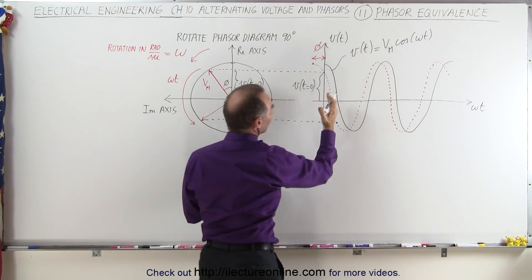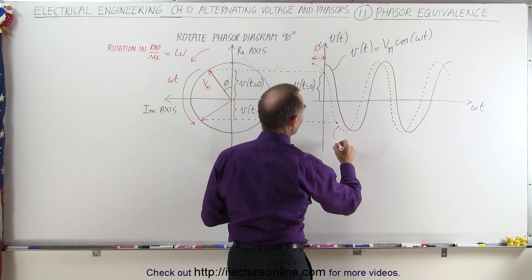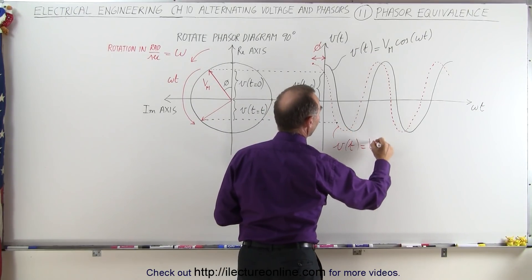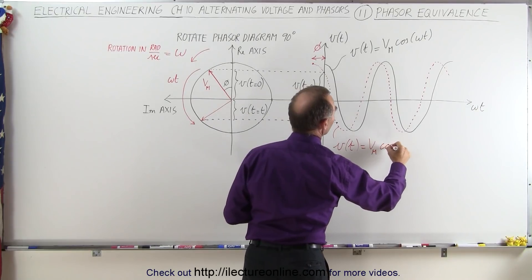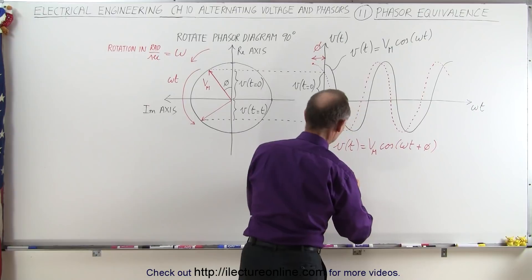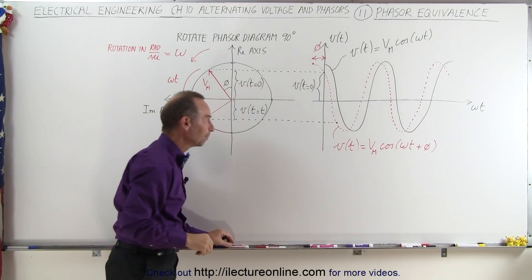And then we see that we've shifted the voltage just a little bit, so if we want to write this new equation, we can say that the voltage as a function of time is equal to the maximum voltage times the cosine of omega t plus a phase angle.